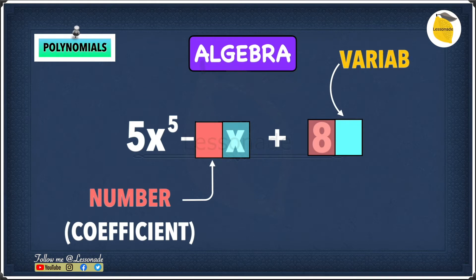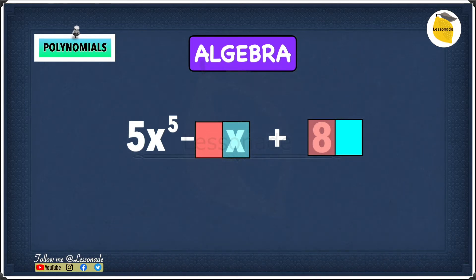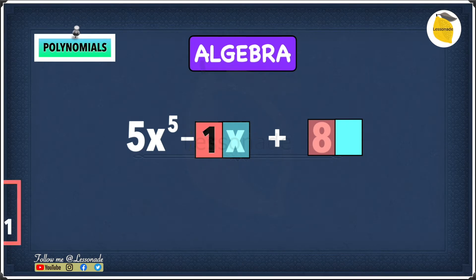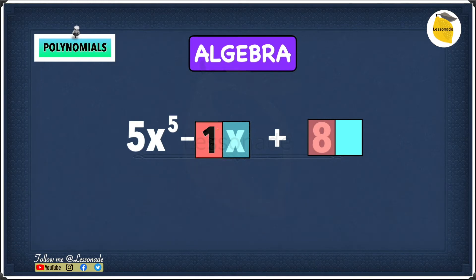For the x, there's actually a number there — we just can't see it. We know that every number has a factor of 1, and multiplying a number by 1 doesn't change the value. So whenever you just have the variable and not the number part, it's always a 1 in front of the variable.